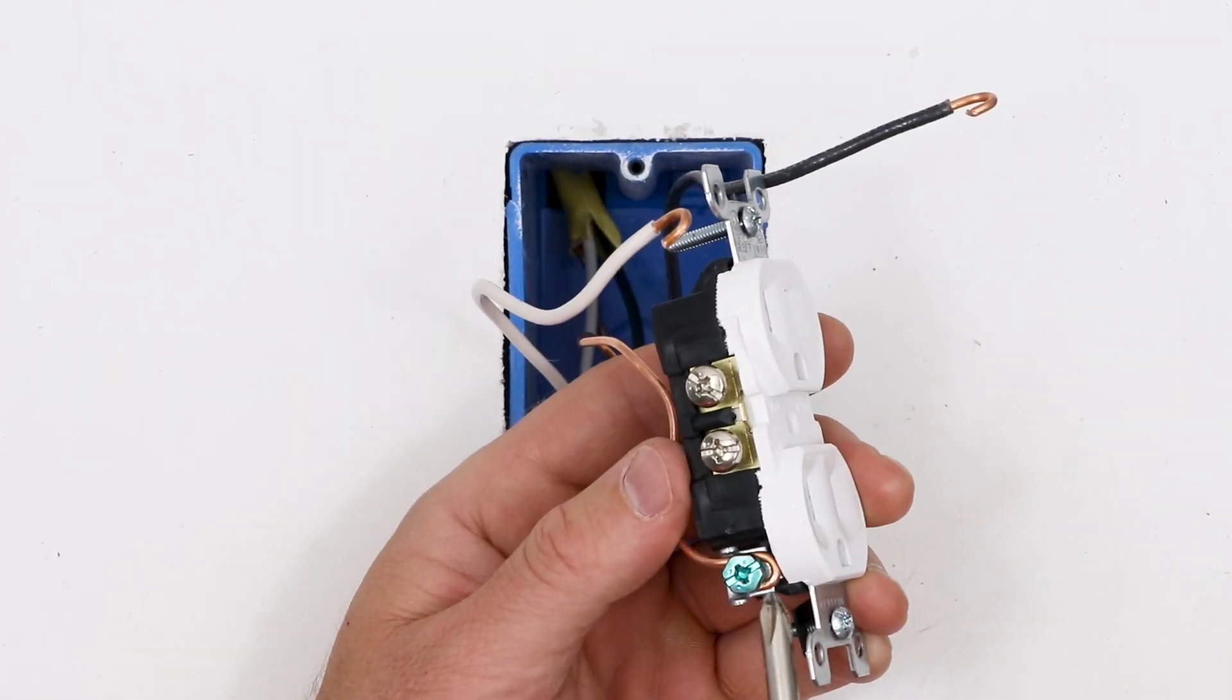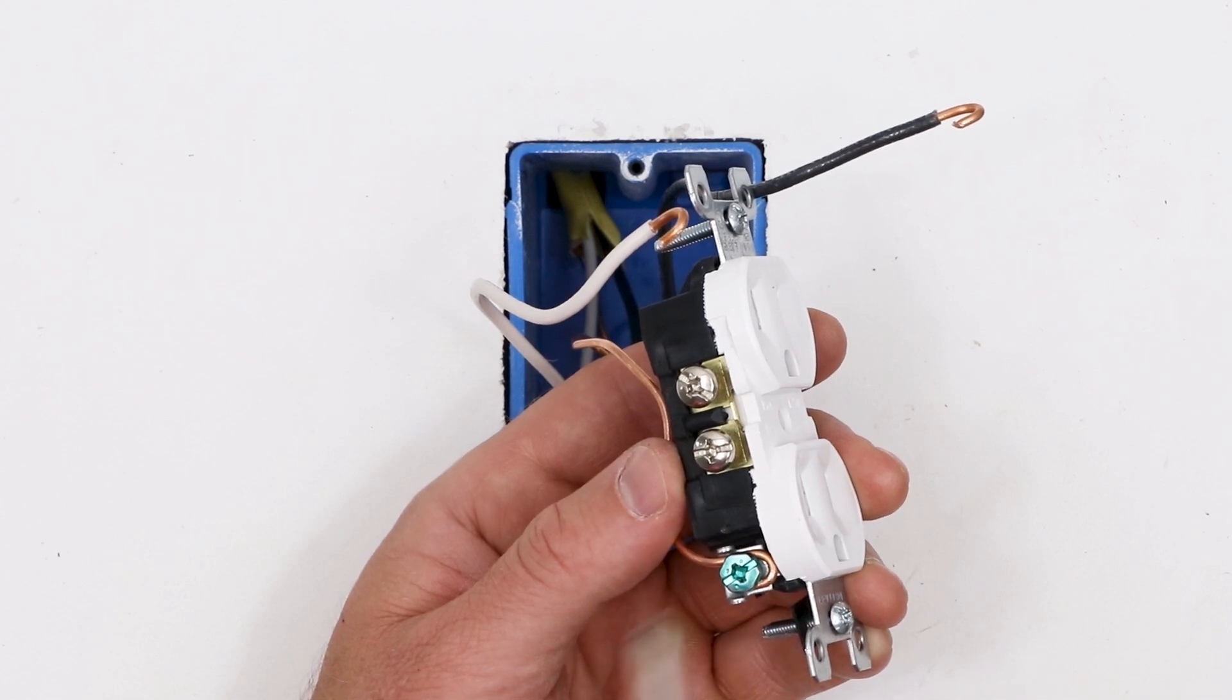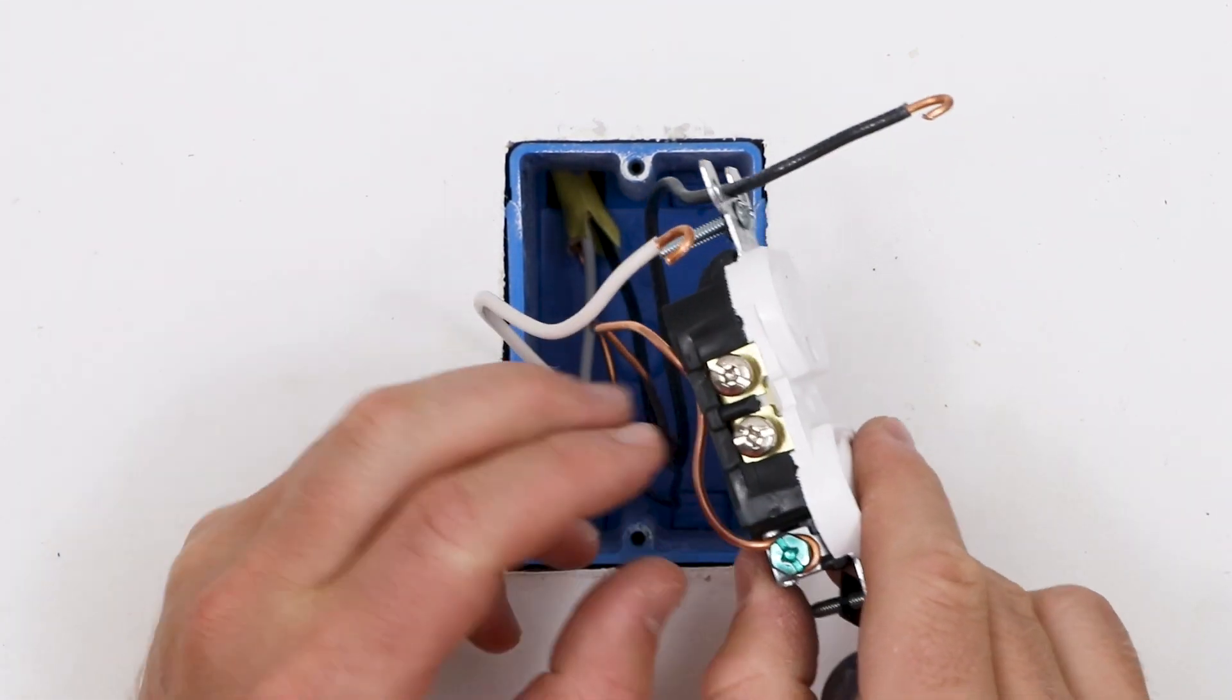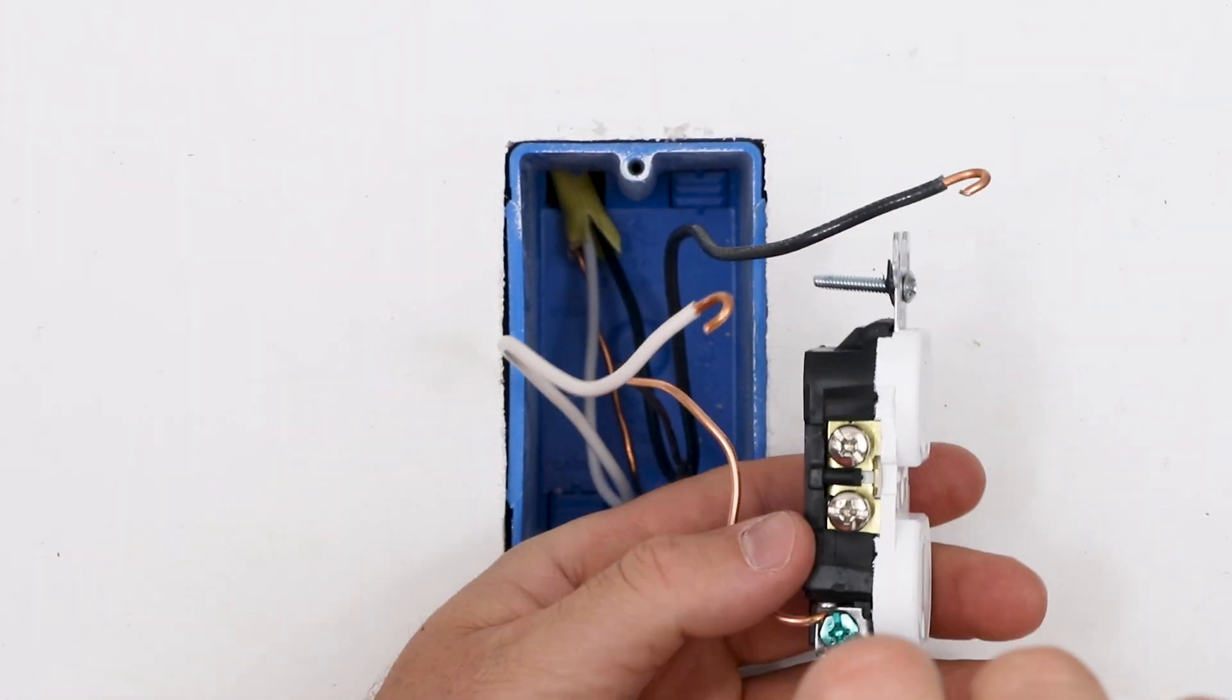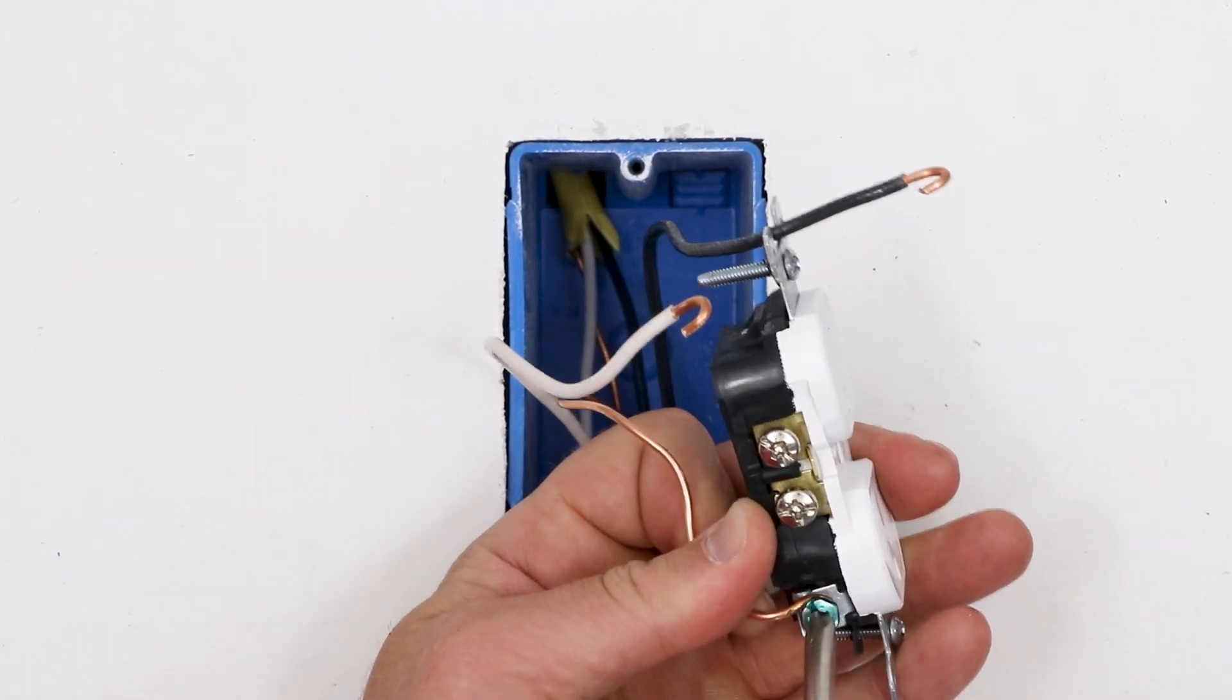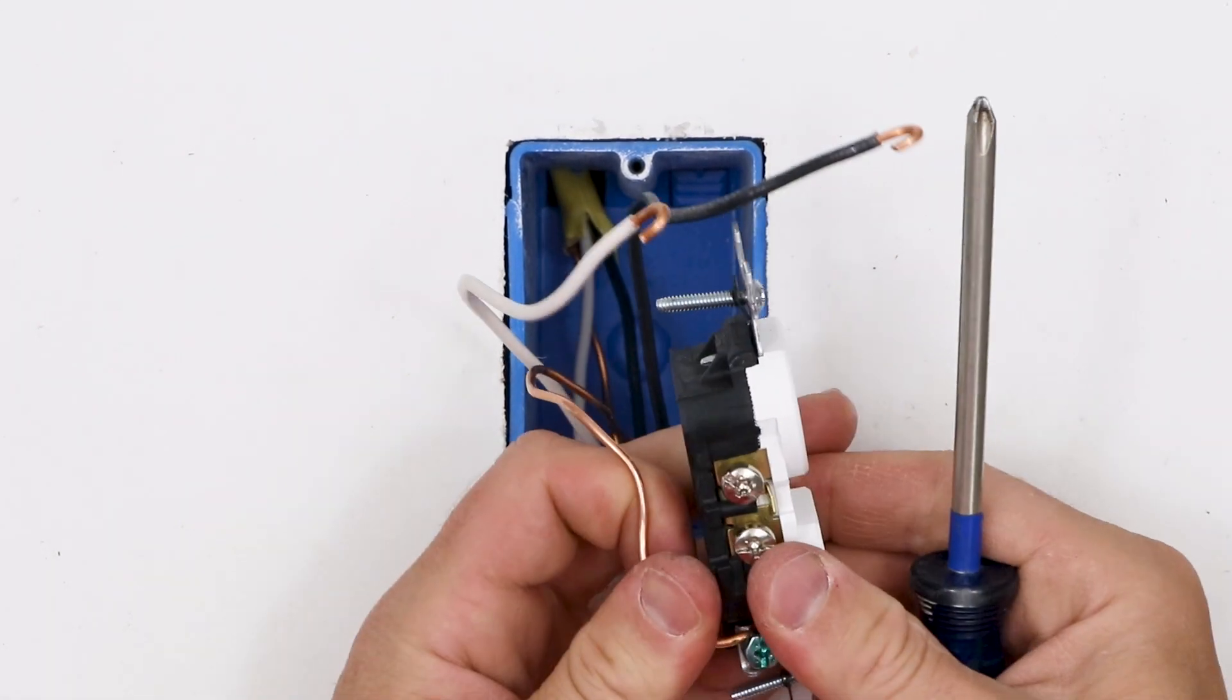Now here I don't have a really great connection. You can see the loop of this ground is up high. I needed to pull it down further. So I'm going to go ahead and back it off, pull it down a little better, and then re-tighten. We learn from our mistakes. Hopefully we don't make any big ones with electricity though.